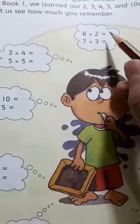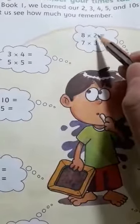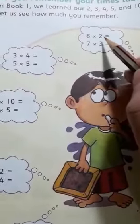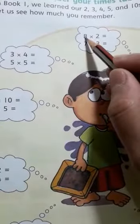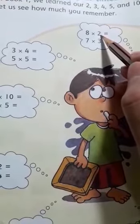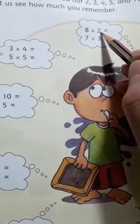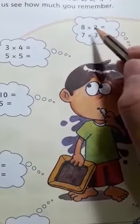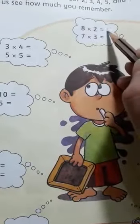Our first part is 8 multiplied by 2. We read 2's table: 2 ones are 2, 2 twos are 4, 2 threes are 6, 2 fours are 8, 2 fives are 10, 2 sixes are 12, 2 sevens are 14, and 2 eights are 16.